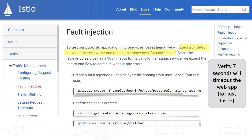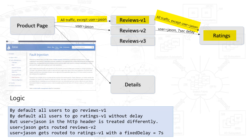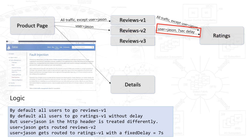On the Istio site, the example injects a seven-second delay between the reviews version 2 and ratings microservices, but only when the HTTP header contains user equals JSON. For all other users, there will be no fault injection. By default, all users go to reviews v1 and ratings v1 without delay. But when the HTTP header has user equals JSON, those users get routed to reviews v2, and when forwarded to the downstream ratings v1, there will be a fixed delay of seven seconds. This diagram depicts what we expect to see at runtime.